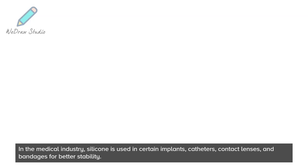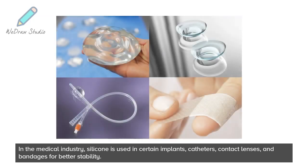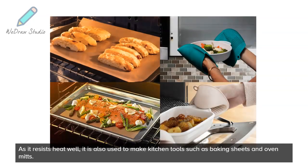In the medical industry, silicone is used in certain implants, catheters, contact lenses, and bandages for better stability. As it resists heat well, it is also used to make kitchen tools such as baking sheets and oven mitts.